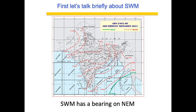Before we get into the Northeast monsoon dynamics, I think we should briefly touch upon the Southwest monsoon because it has a bearing on the Northeast monsoon dynamics. The diagram I have put up shows where the Southwest monsoon initiates — the branch hits the South Andaman Sea, and that's the starting point of our summer monsoon season.